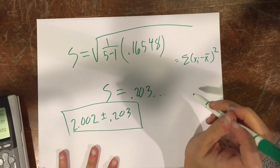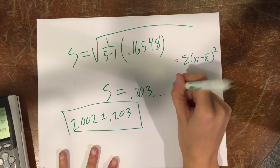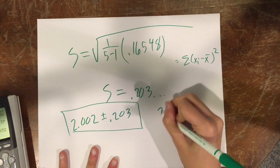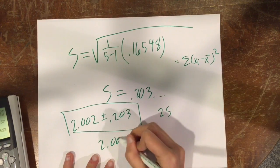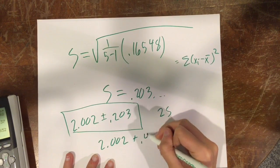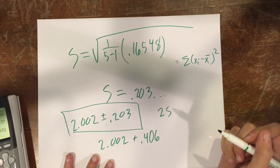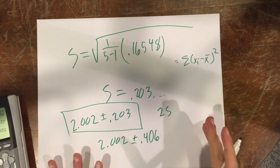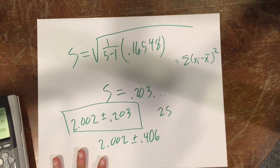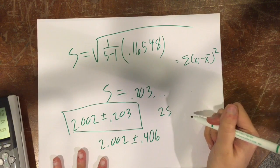When people do standard deviation, they will often also do 2s, you know, so just double the standard deviation, so like 2.02 plus or minus 0.406. Because it's more accurate, they feel like.